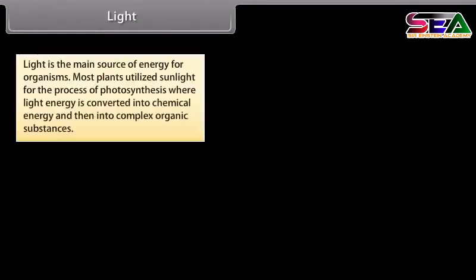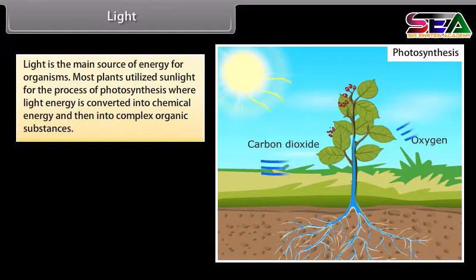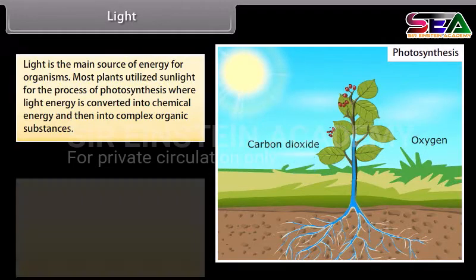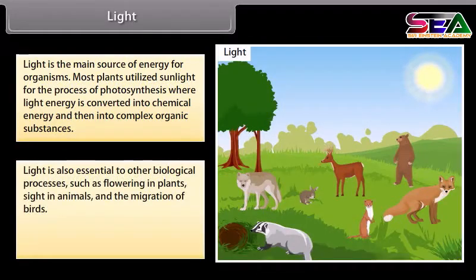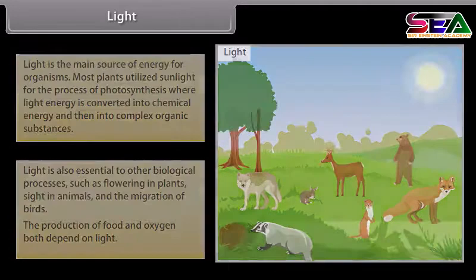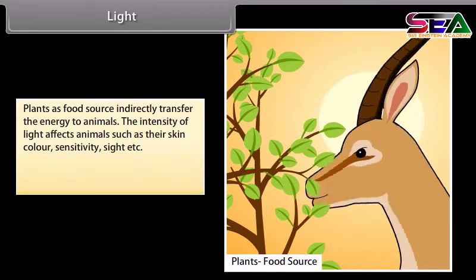Light is the main source of energy for organisms. Most plants utilize sunlight for photosynthesis, where light energy is converted into chemical energy and then into complex organic substances. Light is also essential to other biological processes such as flowering in plants, sight in animals, and the migration of birds. The production of food and oxygen both depend on light. Plants as a food source indirectly transfer energy to animals.